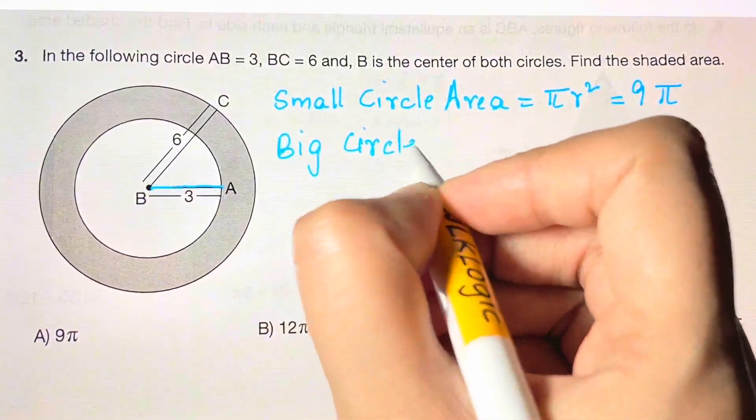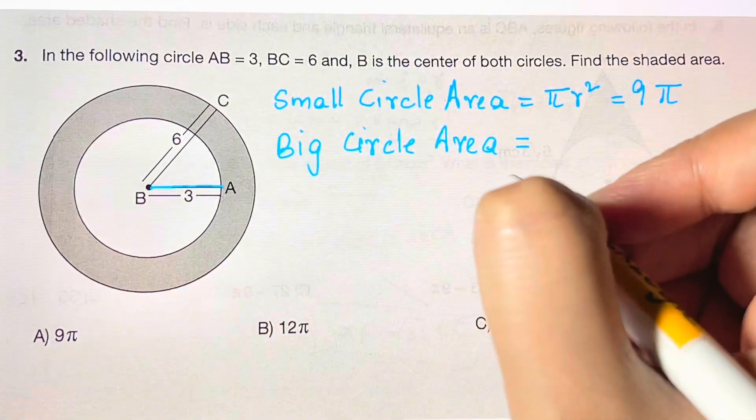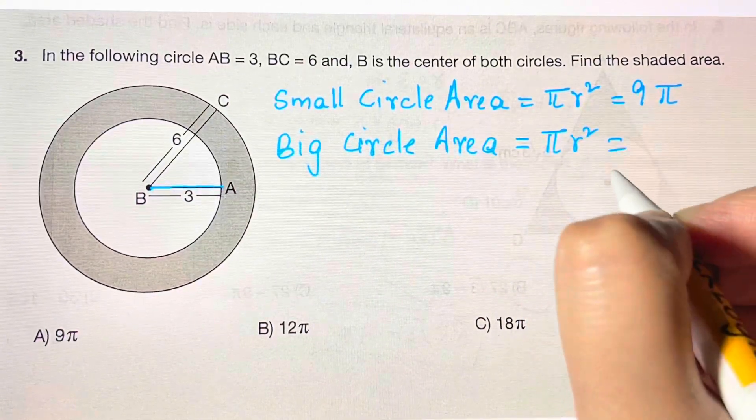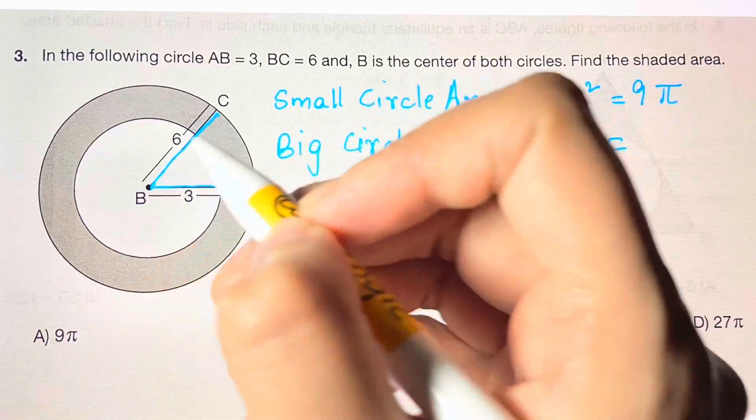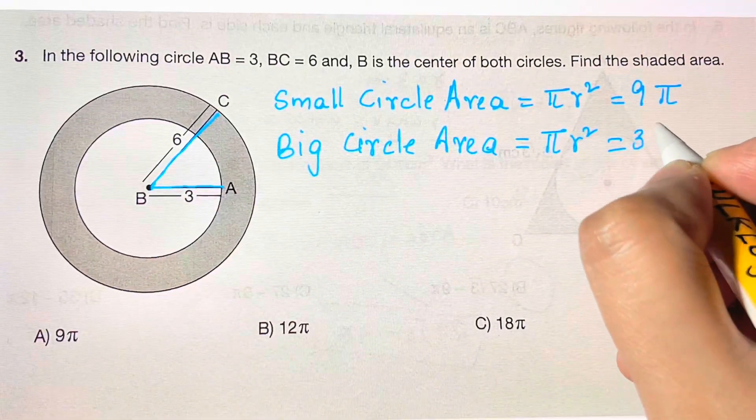Now the bigger circle area is also πr². The radius of the bigger circle is 6, so we plug that in. 6² is 36, so we have 36π.